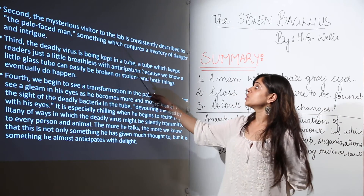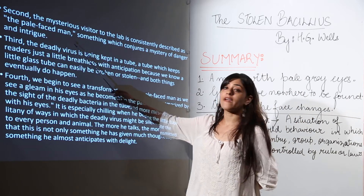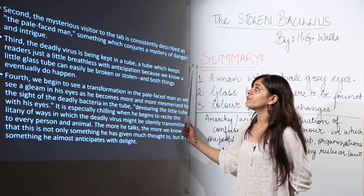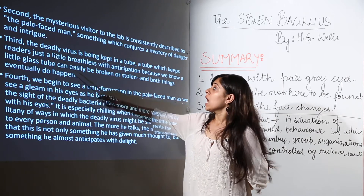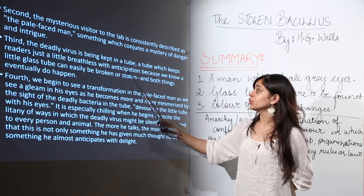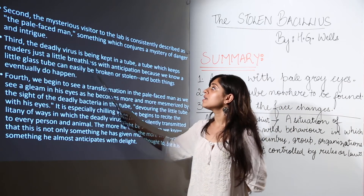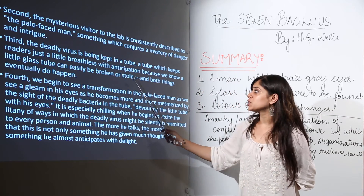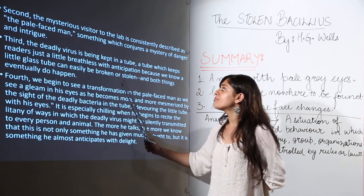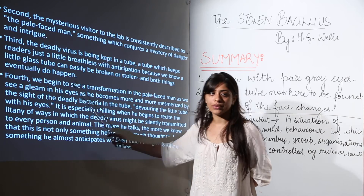Second, the mysterious visitor to the lab is consistently described as the pale-faced man — something which conjures a mystery of danger and intrigue. Third, the deadly virus is kept in a tube — a tube which keeps readers breathless with anticipation, because we know a little glass tube can easily be broken or stolen, and both things eventually do happen.